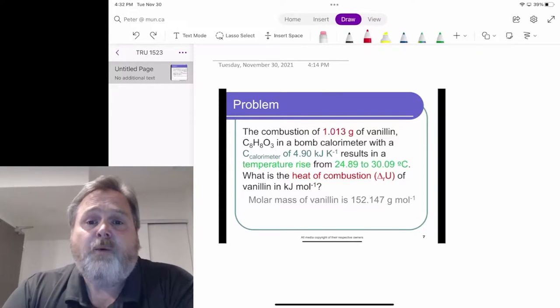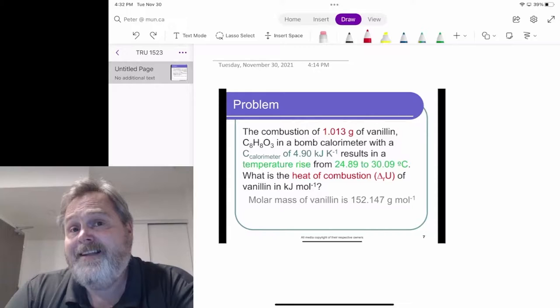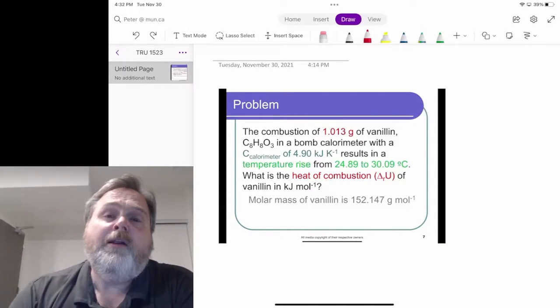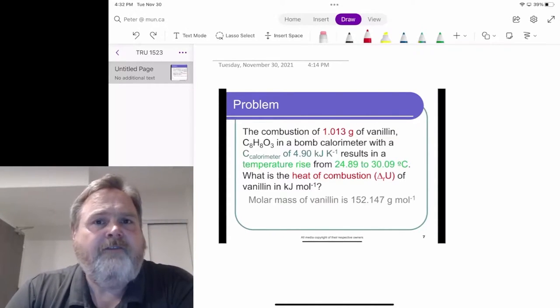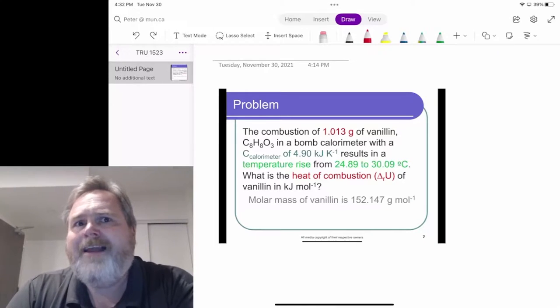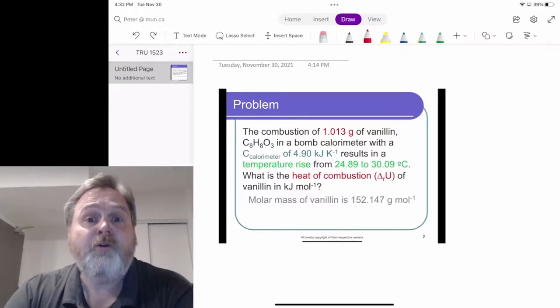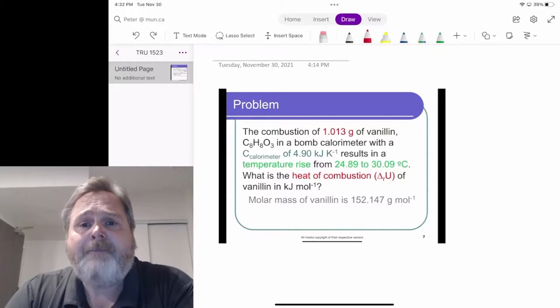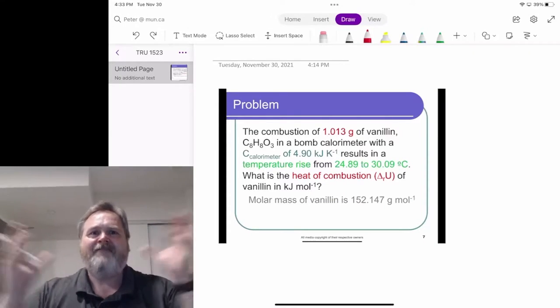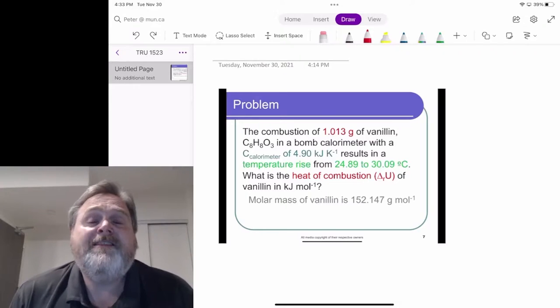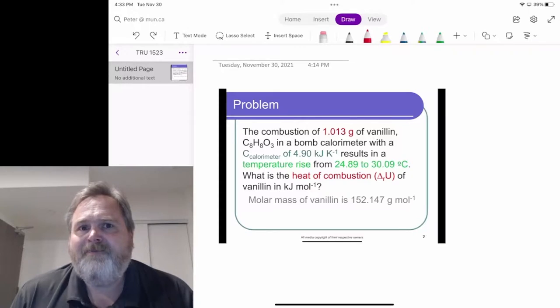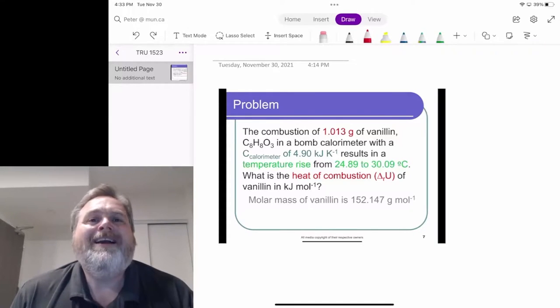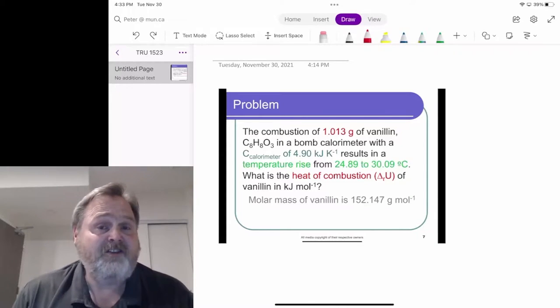What we would do is we take 1.013 grams of this vanillin and essentially put it in a little bowl inside a rigid metal container full of oxygen. That little bowl has essentially a lighting mechanism so we can burn the vanillin. And what's going to happen is the heat from that burning is going to exit that rigid metal container through the walls of the metal container into a water bath in which the metal container is immersed. And it's that water bath that is going to see a temperature change because the heat will leave the combustion reaction and go into the water and other parts of the calorimeter.